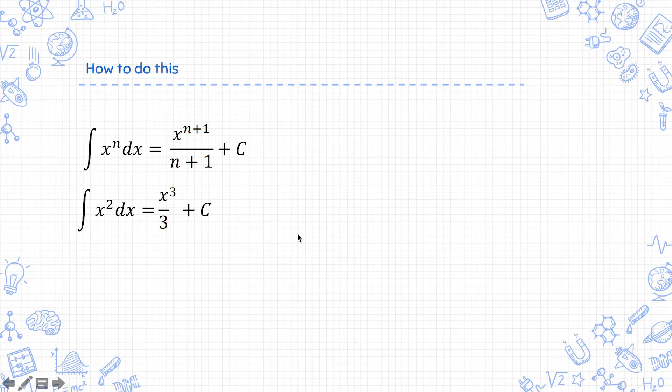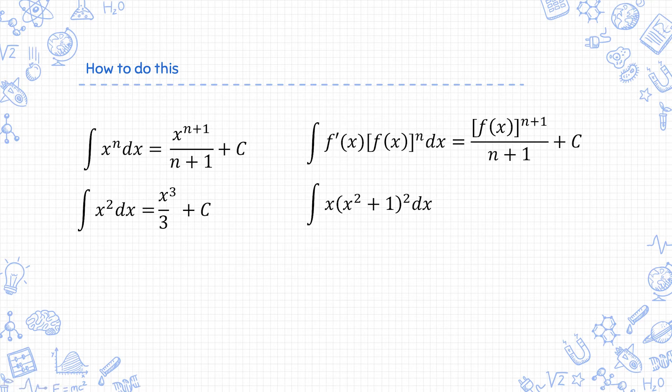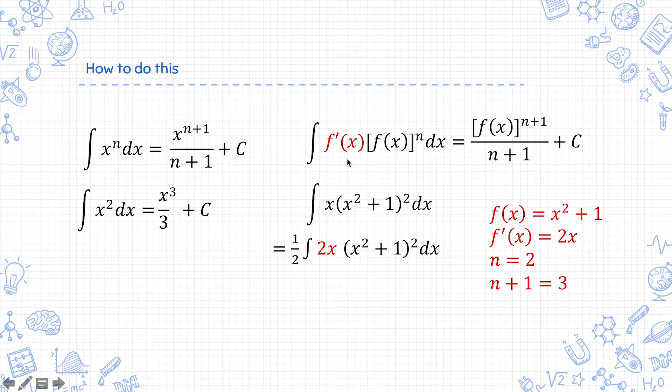you get x cubed over 3 because n plus 1 is 3. Extend this result by replacing the x with fx and adding an f'x here. Let's apply this to an example question, integrating x times (x squared plus 1) to the power of 2. In this case, fx equals x squared plus 1 and n equals 2. So when you differentiate fx, you get f'x equals 2x. And since n equals 2, n plus 1 equals 3.